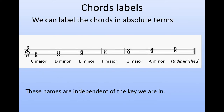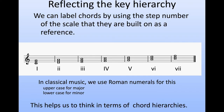We can give these chords labels: C major, D minor, E minor, and so on. Now, these names are independent of what key we're in — they're just absolute names. But if we want to reflect our key hierarchy, we can label them by numbers instead. The chord built on C we call 1, on D we call 2, E is 3, 4 is on F, 5 is on G, 6 is on A, and 7 is on B.